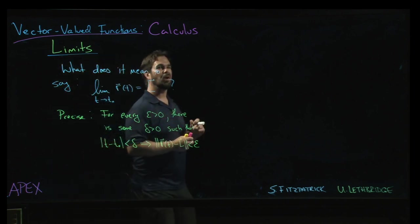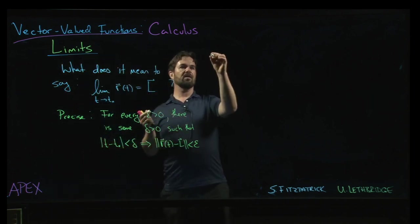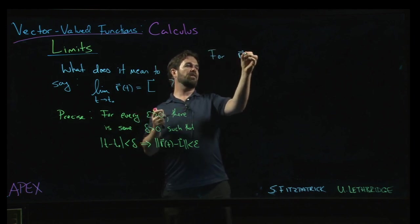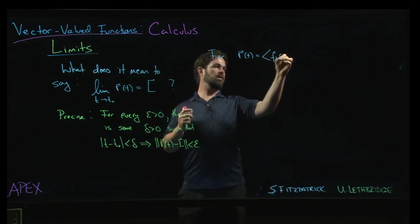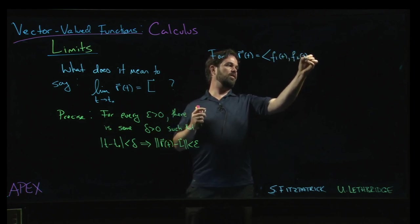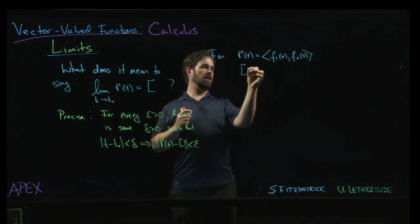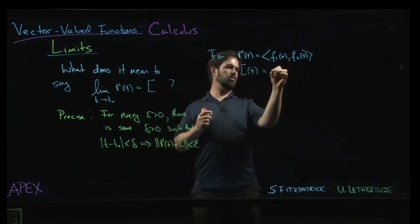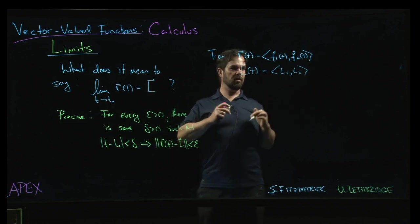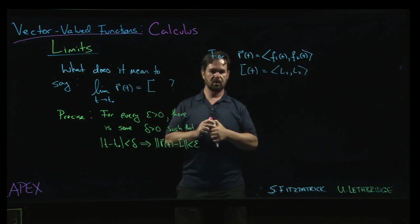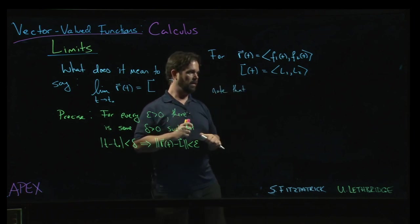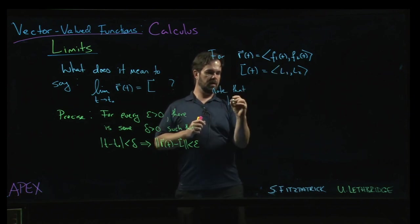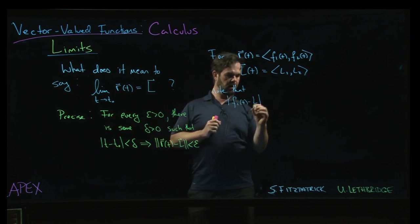Now, one thing that we can do with this is: let's say that r(t) is f1(t), f2(t), and L is equal to L1, L2. One of the things that you'll notice is that the absolute value of f1(t) minus L...